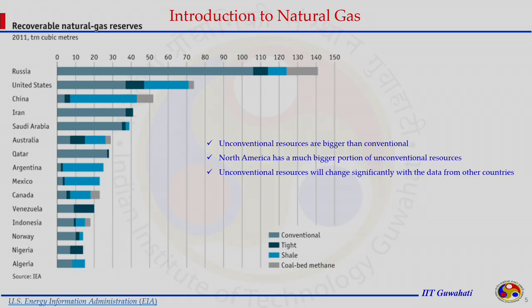In 2011, the EIA published data showing different countries' conventional tight gas, shale gas, and coal bed methane reserves. Russia dominates in conventional natural gas, followed by the Middle East — Iran and Saudi Arabia — while in unconventional resources, the United States dominates across all sectors.